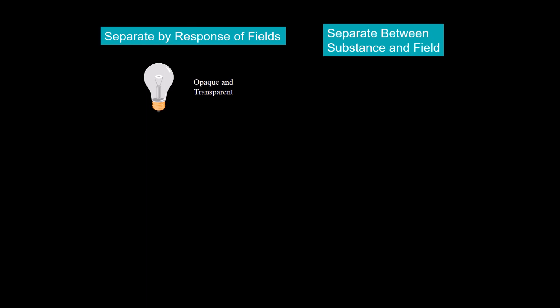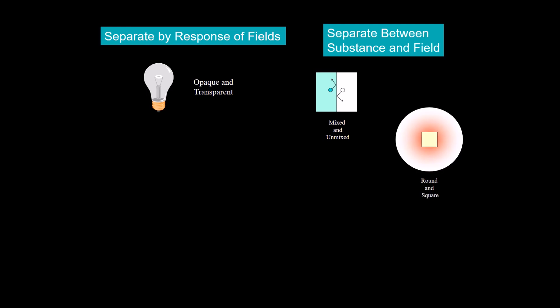In separating between substance and field, no test is given. However, note the examples that the substance and the fields can have opposing properties. Gas molecules can remain unmixed while their energy can be mixed and come to equilibrium at the same temperature. A square shape can have a round temperature field. Stationary field coils on a motor can have a rotating magnetic field.